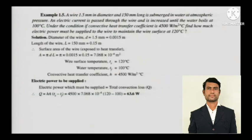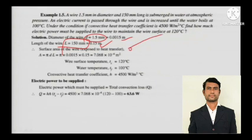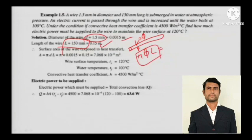The diameter of the wire is d = 1.5 mm, converted into meters. The length of the wire is L = 150 mm. The surface area of the wire — since a wire is a cylinder — is given by A = π × d × L. Pi is a constant, d is the diameter, and L is the length.